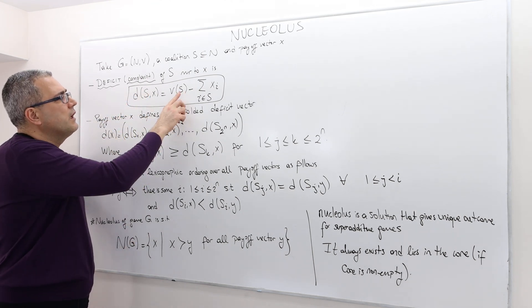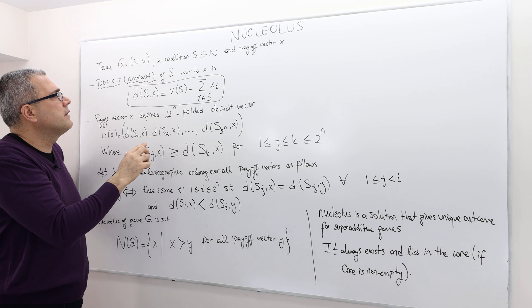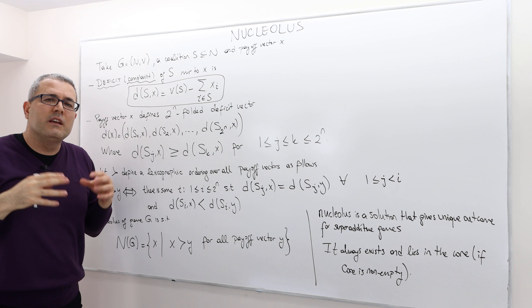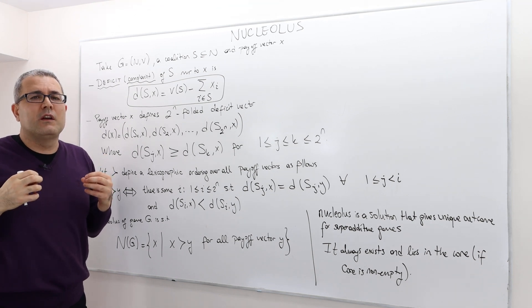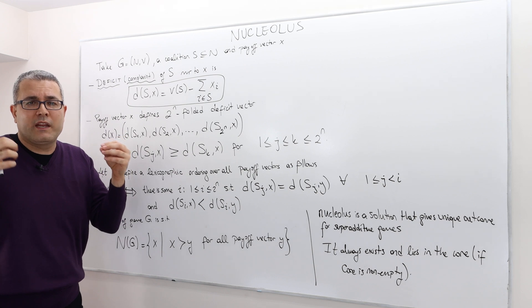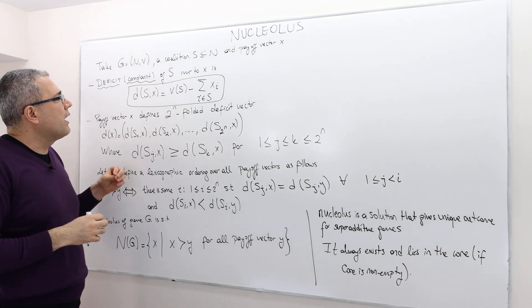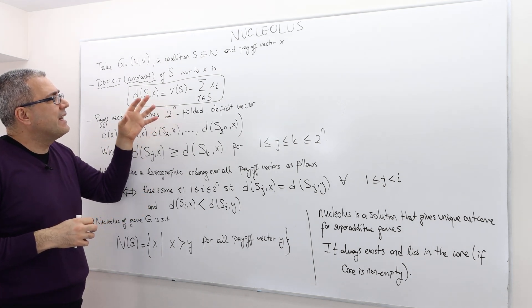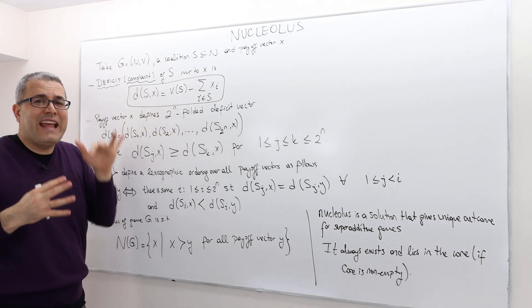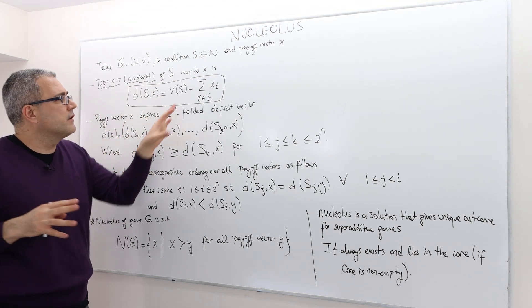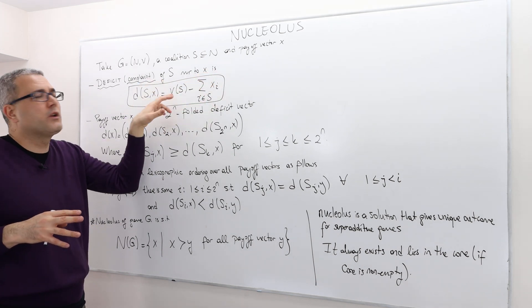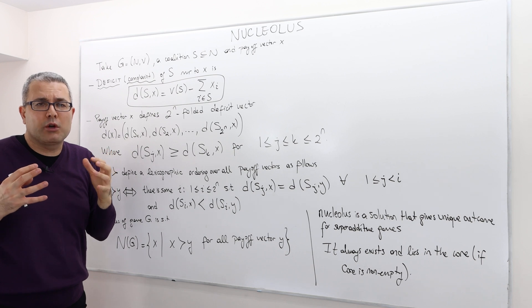If they are the same, that means D is equal to zero, and so this coalition actually achieves payoff which is equal to what it's worth. If it is negative, that's brilliant. They are actually getting payoff much more than what this coalition is worth.